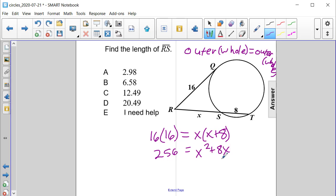And now we have a quadratic, and in order to solve a quadratic, we need to get all of the terms to one side. So we're going to subtract the 256 to move it over, and we'll get that 0 is equal to X squared plus 8X minus 256.